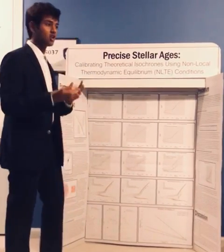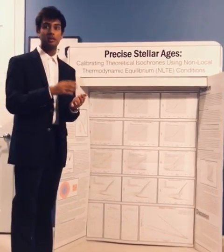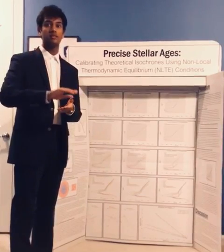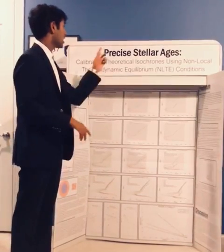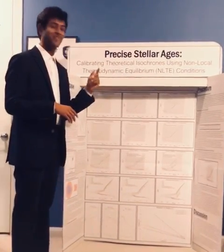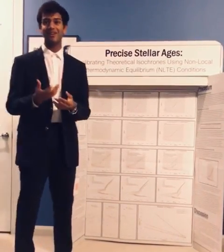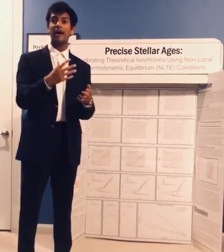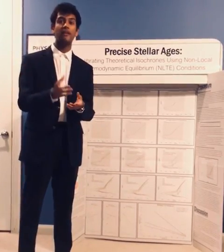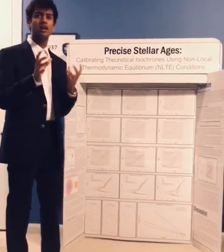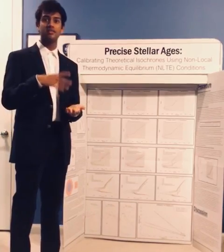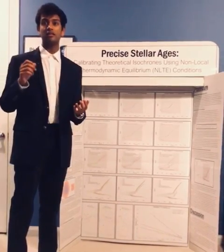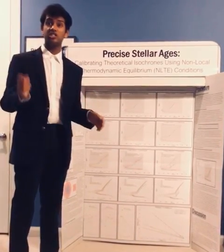One of the tools that astronomers use to calculate the age of stars much further away than the sun are isochrones. Isochrones are graphs that plot stars based on their temperature and how massive they are, their gravity. Based on where a star lies on this isochrone graph, we can give it an age and date it.